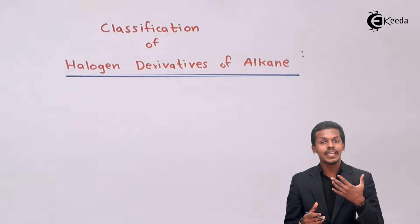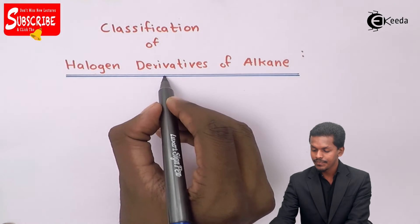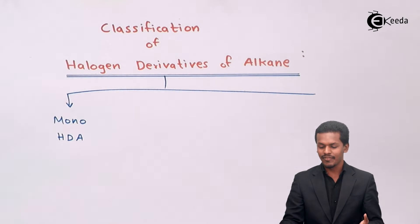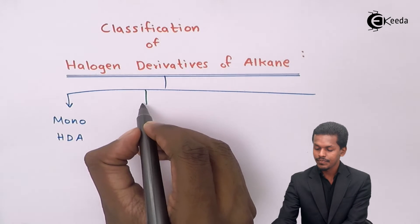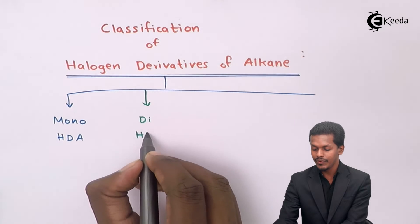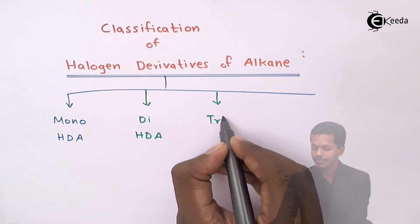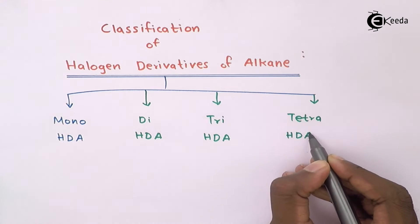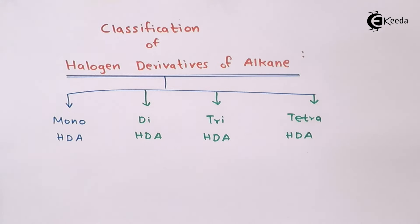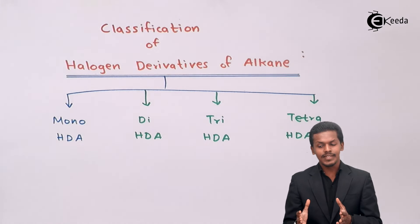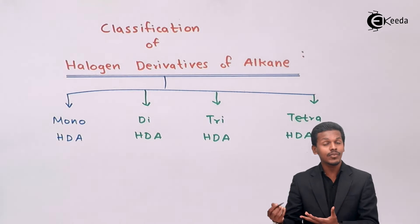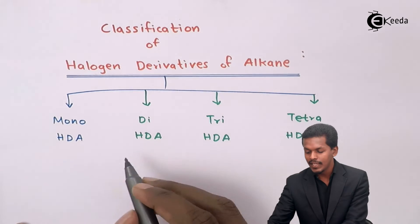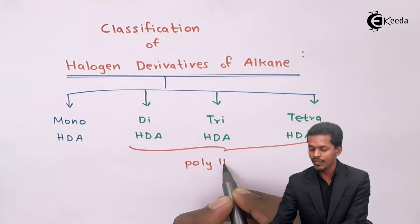Haloalkanes are classified into basically four types. The first is monohalogen derivative of alkane (mono-HDA). The second is dihalogen derivative of alkane (di-HDA). The next is trihalogen derivative (tri-HDA), and the last one is tetra-HDA. The latter three — di, tri, and tetra — can also be collectively called polyhalogen derivatives of alkane.